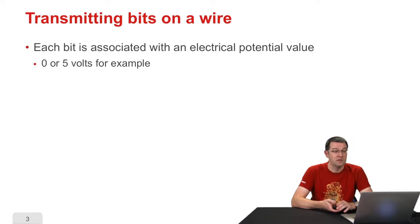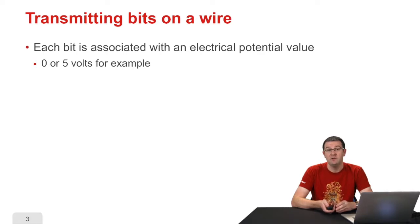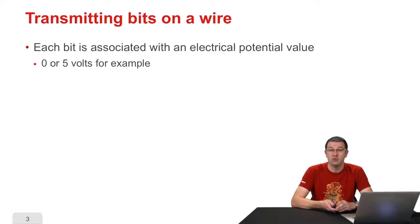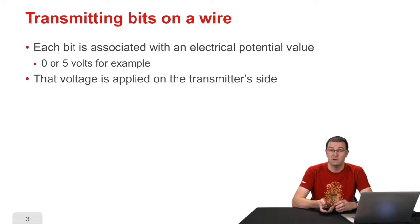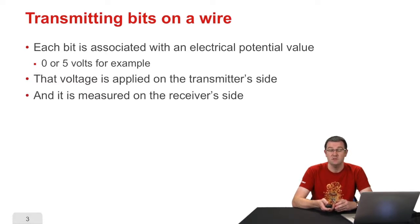To send data on an electrical wire, each bit value will be associated with an electrical potential. For example, a zero bit will be associated with a zero electric potential, whereas a one bit will be associated with a five volts electric potential. A voltage is applied on the transmitter side, through the wire, and the receiver measures the voltage to understand if the bit it is receiving is a zero or a one.